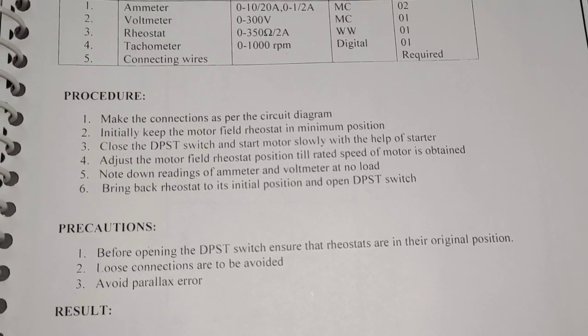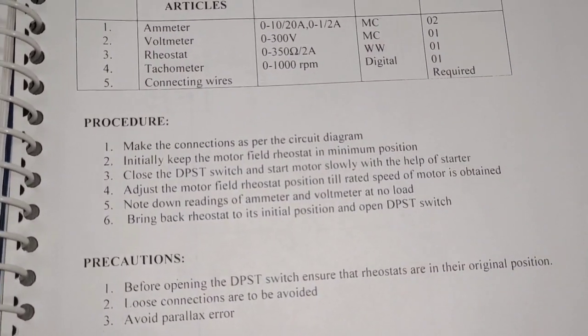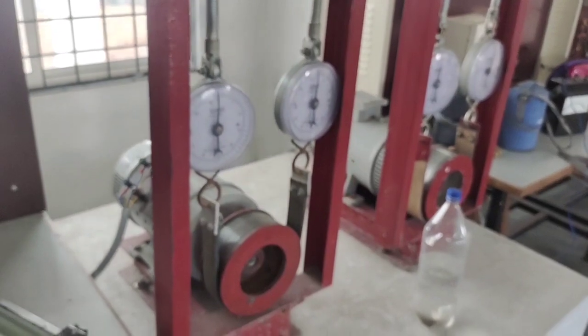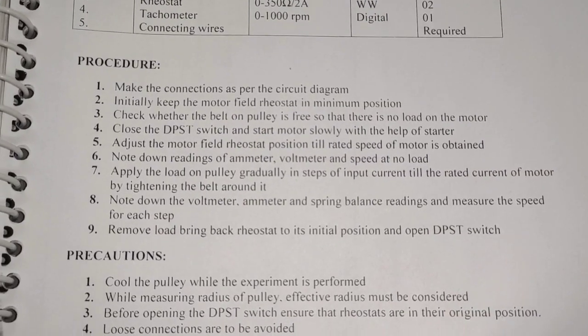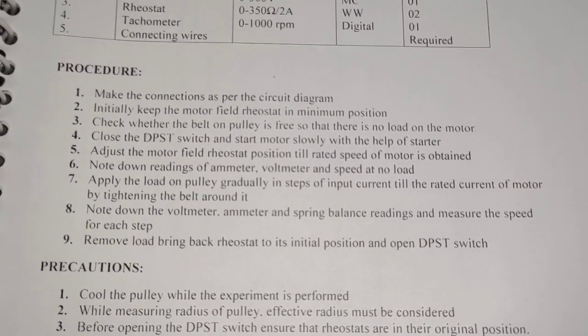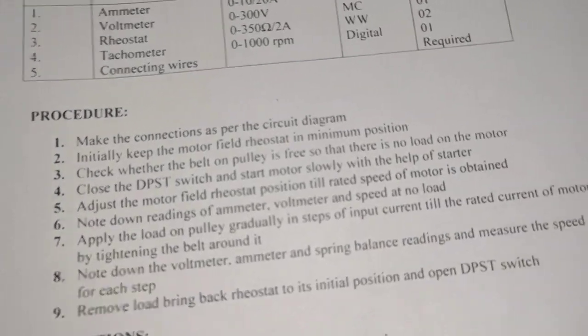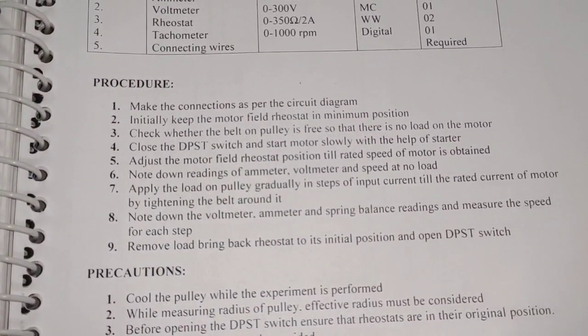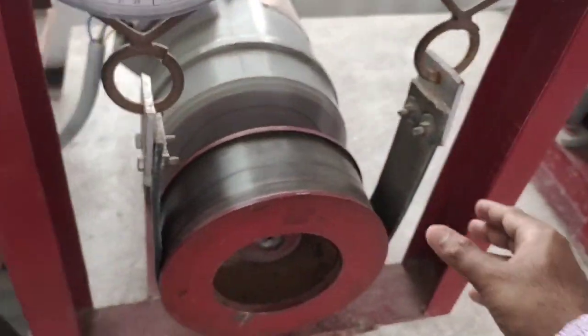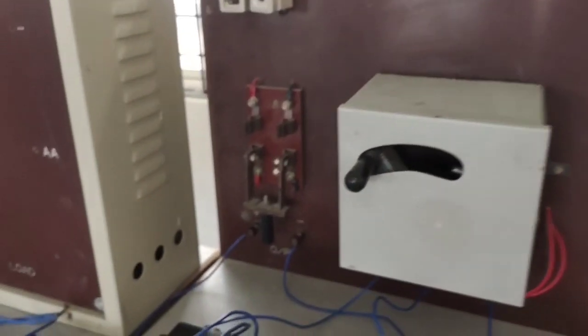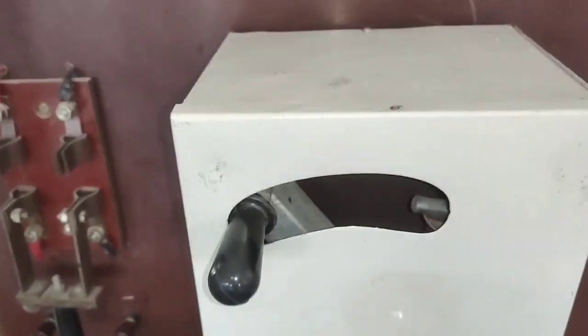Coming to the procedure: firstly make the connections as per the circuit diagram. Initially keep the motor field rheostat in the minimum position — this should be minimum position. Before starting, there should be no load on the motor, which means the belt should be free. Check whether the belt on the pulley is free so there is no load on the motor. Now close the DPST switch and start the motor slowly with the help of the starter.